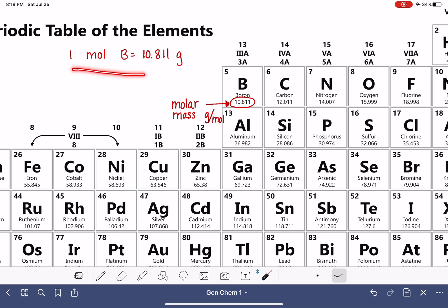We can use this relationship to help us convert back and forth between moles and grams of any atom, as long as we have a periodic table and we can look up its molar mass.